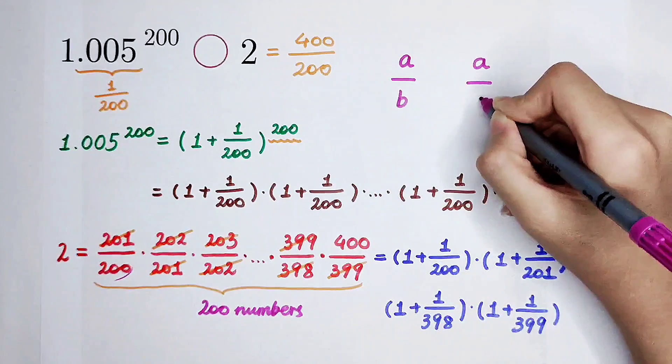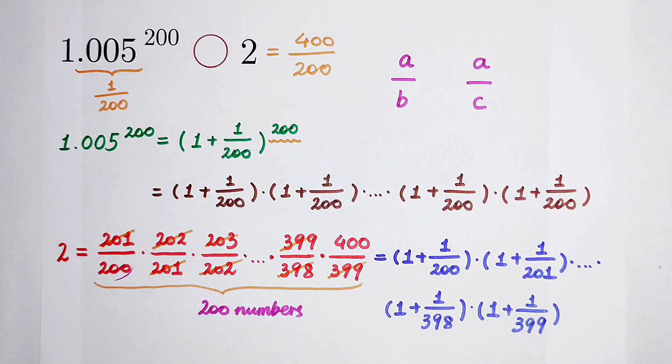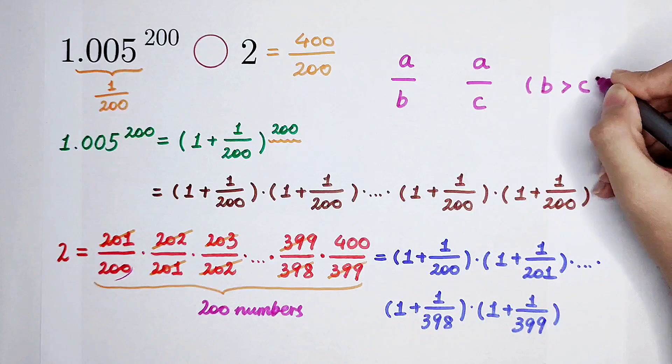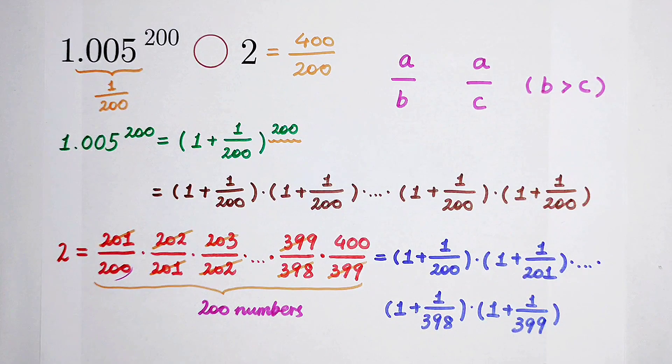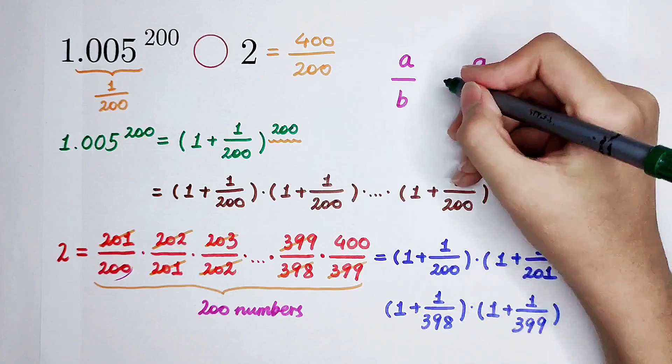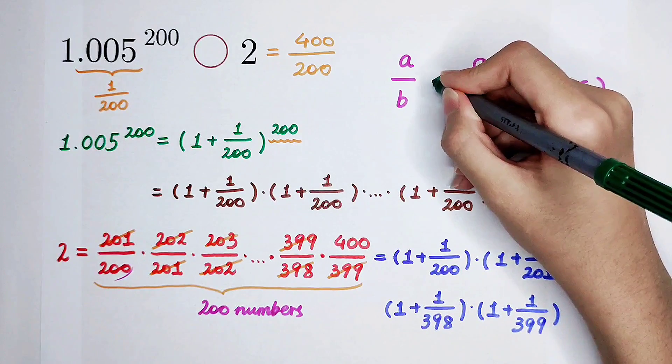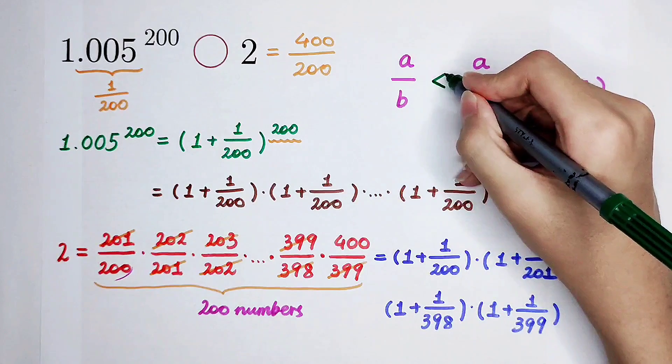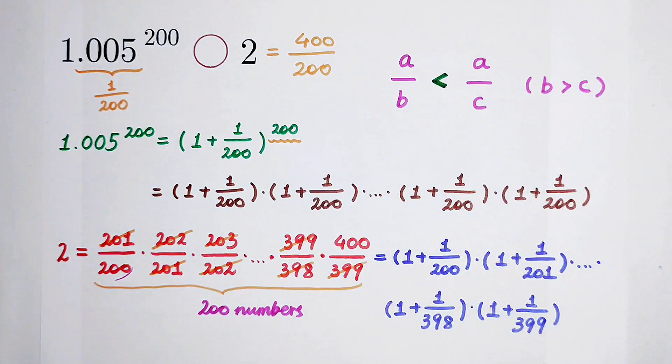and they have different denominators. This is b, this is c. And if b is greater than c, then the value of the fraction a over b, it is smaller than the value of the fraction a over c. You have to remember this. It is very important.